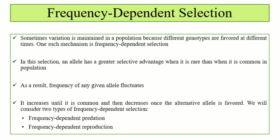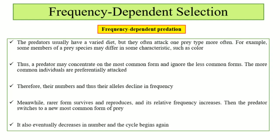Here we will talk about frequency-dependent selection: frequency-dependent predation and frequency-dependent reproduction. In frequency-dependent predation, predators are usually presented with a variety of prey. But one prey type is often attacked more compared to others.